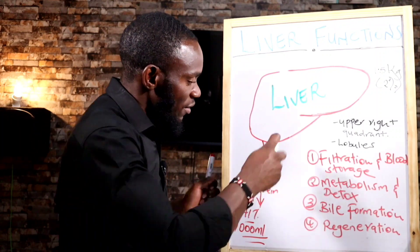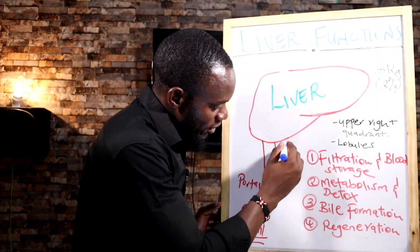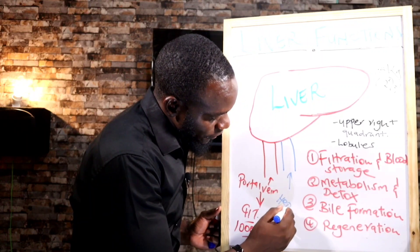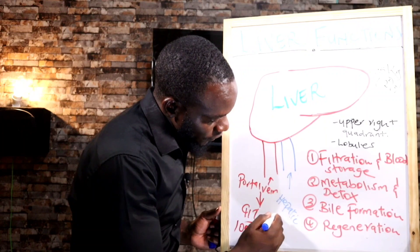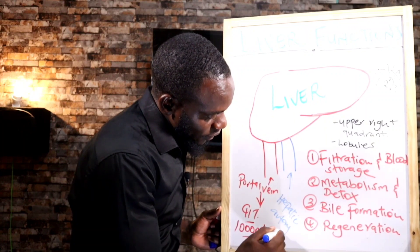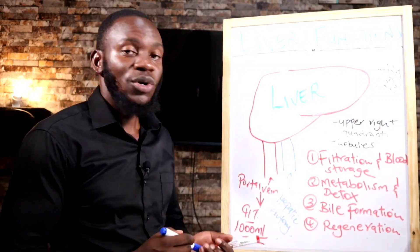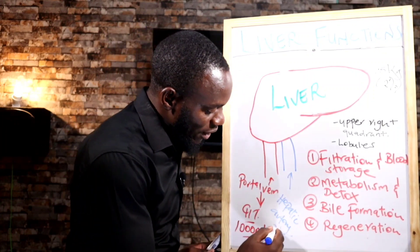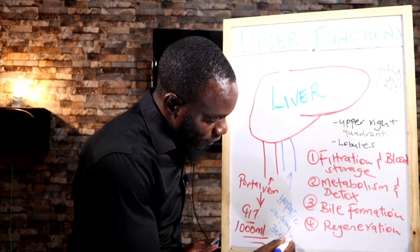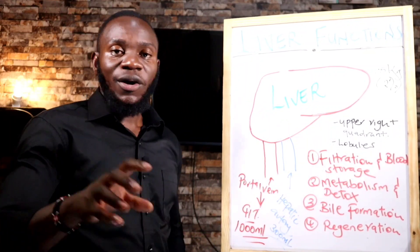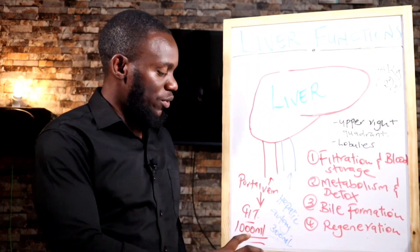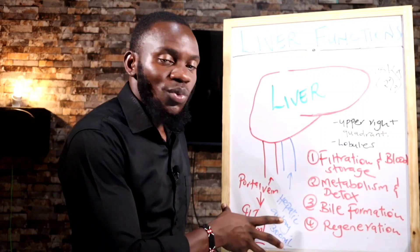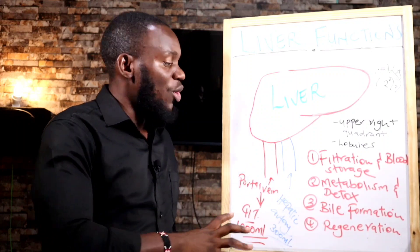The liver also has another blood supply called the hepatic artery. The hepatic artery carries oxygenated blood to the liver, and this hepatic artery carries about 300 ml of blood. So 1,000 plus 300 ml — the liver receives a huge amount of blood, which amounts to 1,300 ml of blood in total.